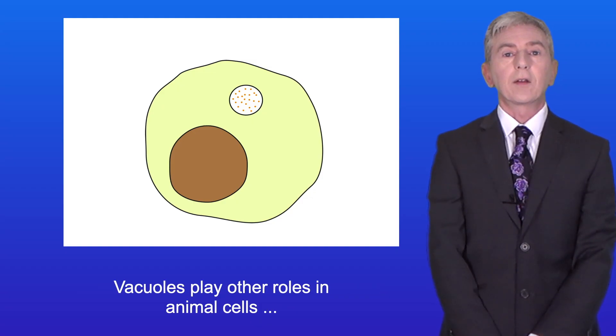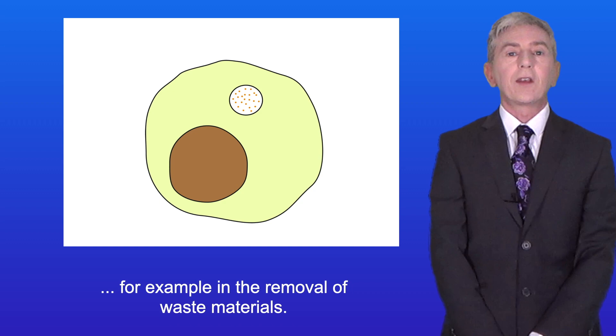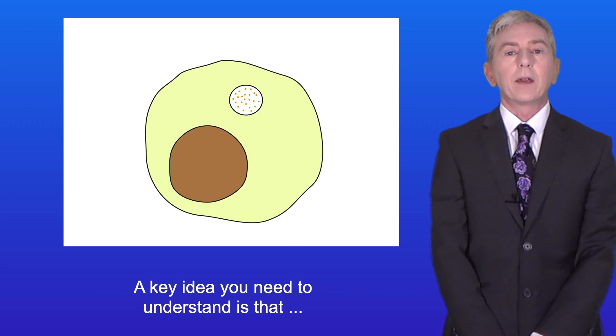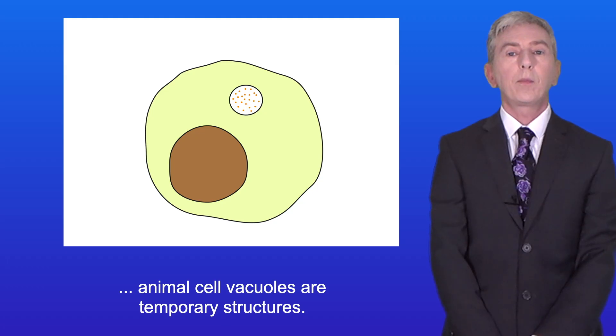Vacuoles play other roles in animal cells, for example in the removal of waste materials. Now a key idea you need to understand is that animal cell vacuoles are temporary structures.